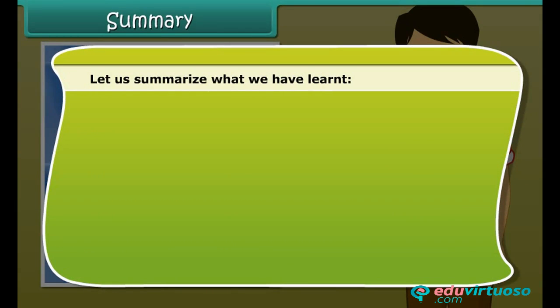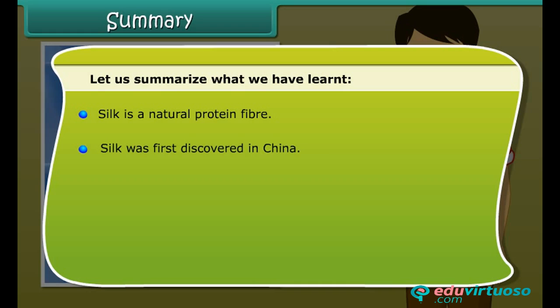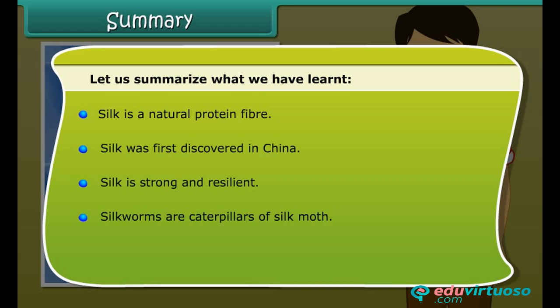Let us summarize what we have learned: Silk is a natural protein fiber. Silk was first discovered in China. Silk is strong and resilient. Silkworms are caterpillars of the silk moth. Silk fiber is obtained from the cocoons spun by silkworms.